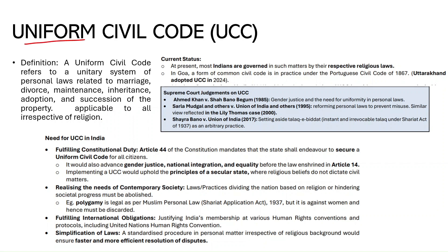The first update is on the Uniform Civil Code. The UCC has been making news lately and we need to understand what it really means, what provisions are there for it in our constitution and law. A Uniform Civil Code refers to a unitary system of personal laws related to marriage, divorce, maintenance, inheritance, adoption, and succession of property, applicable to all religions irrespective of religious affiliation.